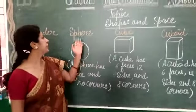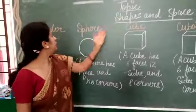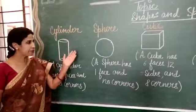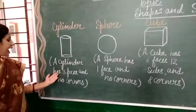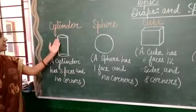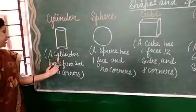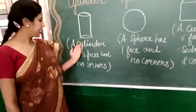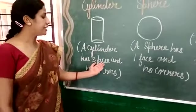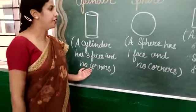Today I am teaching you solid shapes. First is cylinder. A cylinder has three faces and no corners.